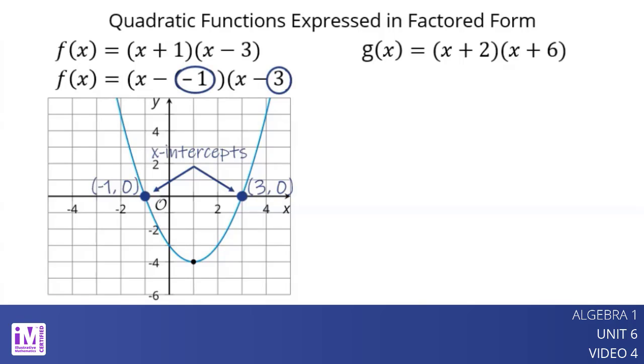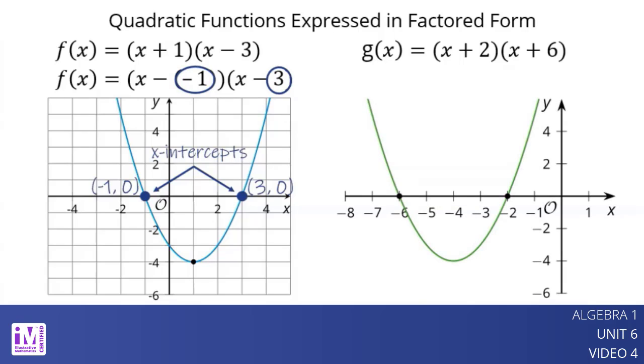If we graph y equals g of x, we see that the x-intercepts are at negative 2 comma 0 and negative 6 comma 0. Notice again that rewriting the terms as x minus negative 2 and x minus negative 6 allows us to see the values of the x-intercepts in the equation.